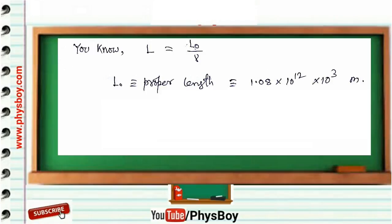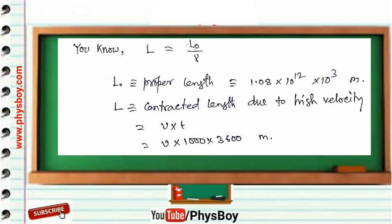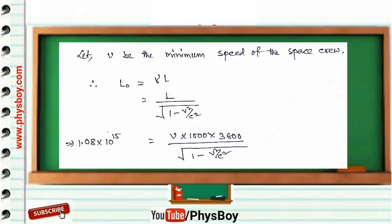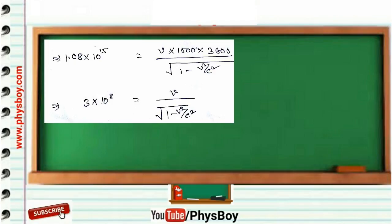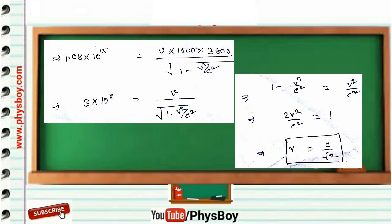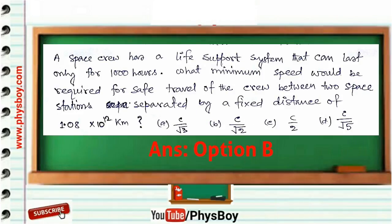Using length contraction: L = L₀/γ, where L₀ = 1.08×10¹² km = 1.08×10¹⁵ m is the proper length. The contracted length L = v×t, with t = 1000 hours = 1000×3600 s. Substituting γ and solving: L₀ = L/√(1 − v²/c²), which gives 1.08×10¹⁵ = v×1000×3600/√(1 − v²/c²). Solving this equation, we get v = c/√2. Option B is the correct answer.